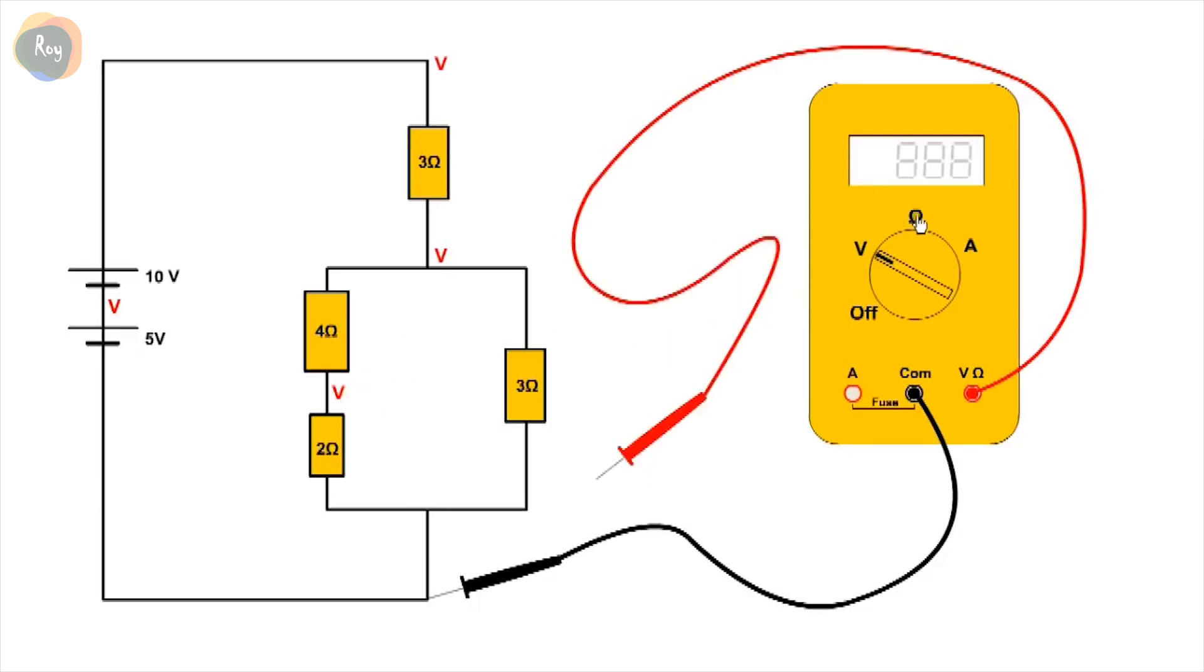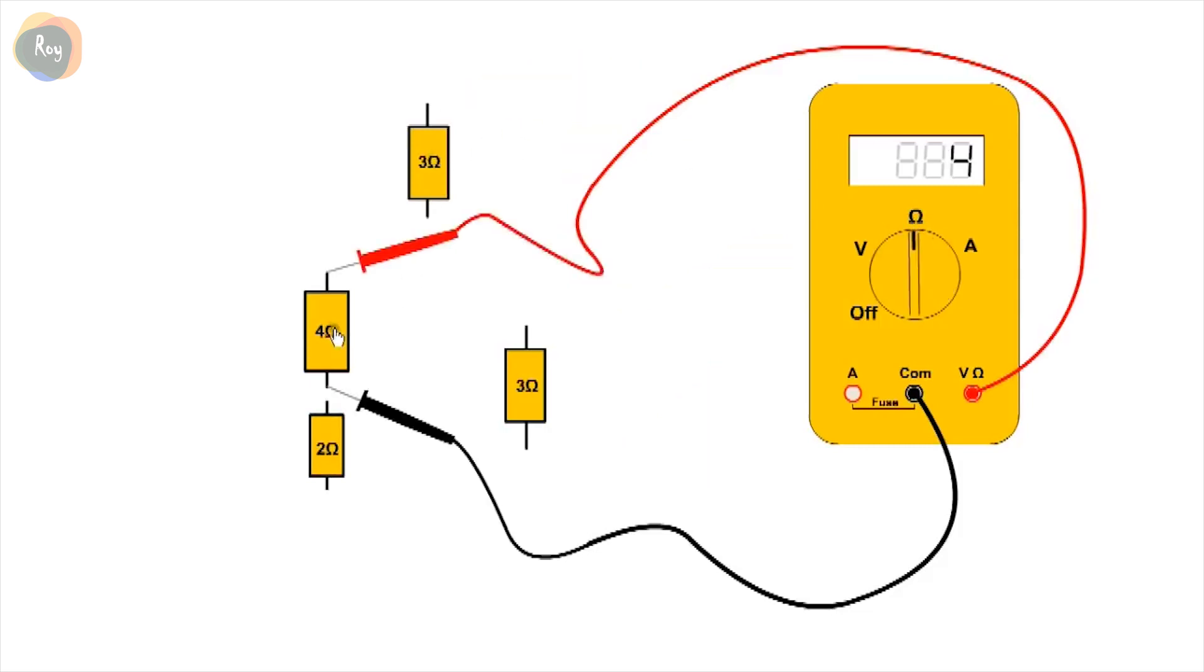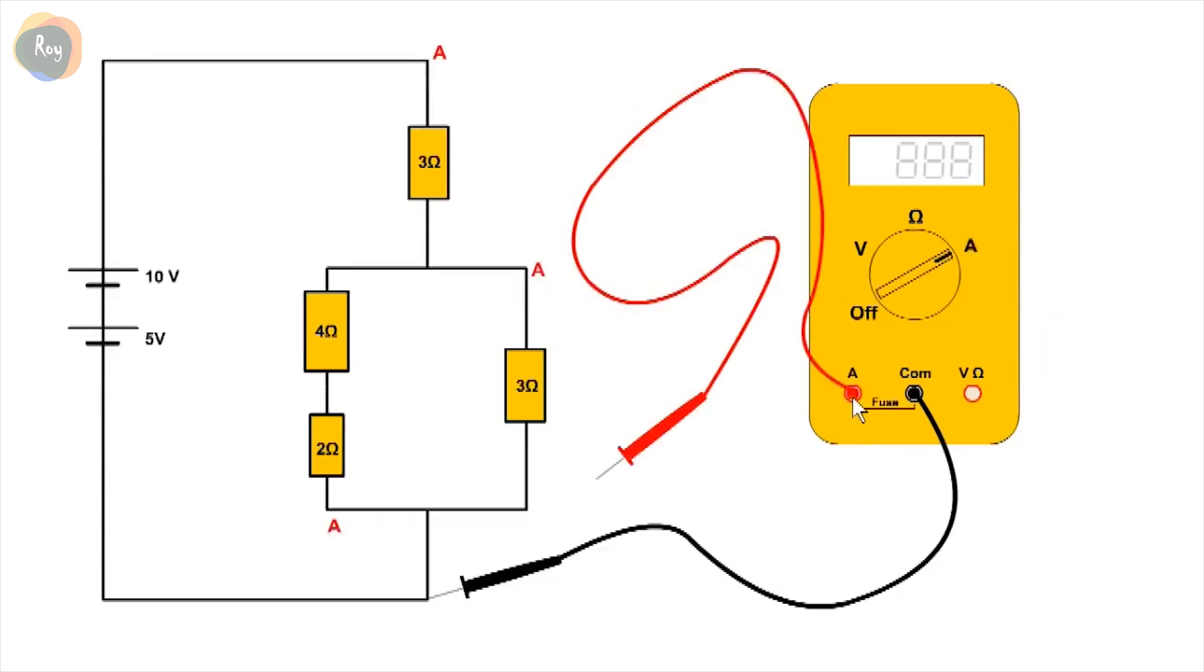To measure resistance, ohms is selected and the resistors are disconnected from the circuit. To measure current, one of the measuring leads must be changed to the current measuring port and amps is also selected. To measure current, we must break into the circuit and allow the current to flow through the multimeter. There is 3 amps at the top of the circuit which divides into 2 amps and 1 amp.